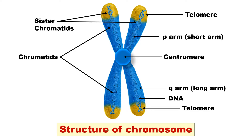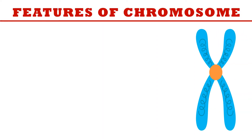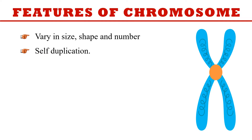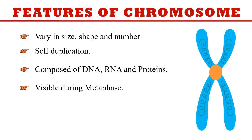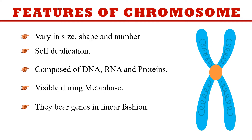Chromosomes have certain features. Their shape and number vary from species to species — each species of plant has a different number, size, and shape of chromosomes. Chromosomes can replicate by themselves, so they are self-duplicating. Chromosomes consist of DNA, RNA, and proteins. They are best visible during metaphase, because during interphase they are so tightly condensed you cannot see them properly. In eukaryotes, chromosomes bear genes in a linear fashion.